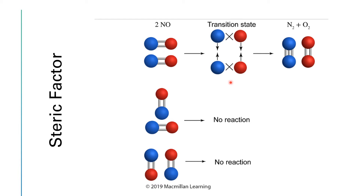Once all that electron shuffling is finished, we end up with a nitrogen molecule and an oxygen molecule. That can happen if the molecules line up correctly to begin with. But what if they collide in a different orientation? If this NO molecule collides head-on to the middle of the other NO molecule, the atoms aren't lining up, the electron orbitals aren't lining up, and no reaction takes place. Or if the nitrogen of one molecule lines up with the oxygen of the other, again there's going to be no reaction. So the steric factor simply refers to what fraction of the collisions occur with the correct orientation.